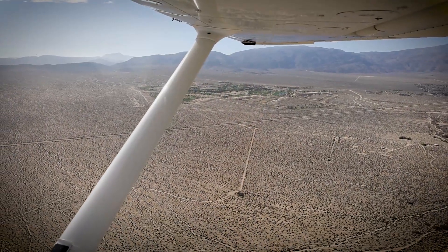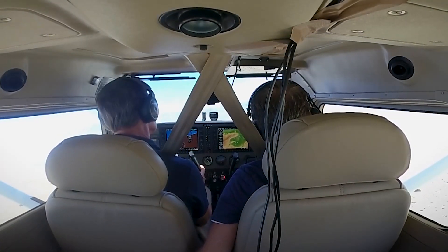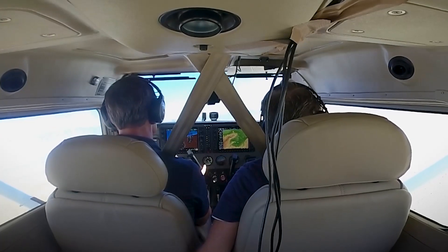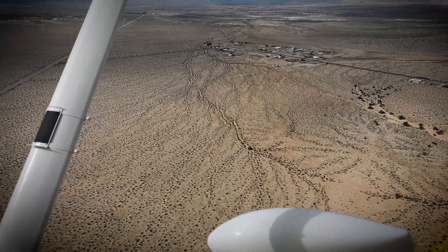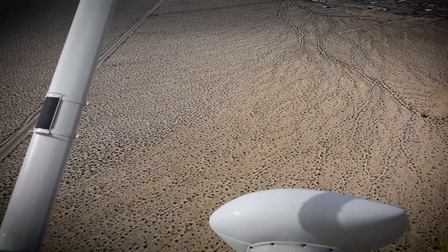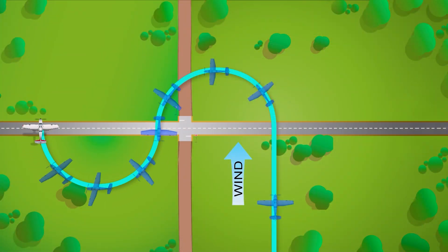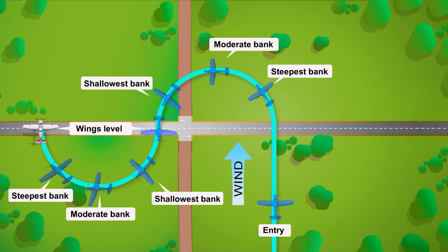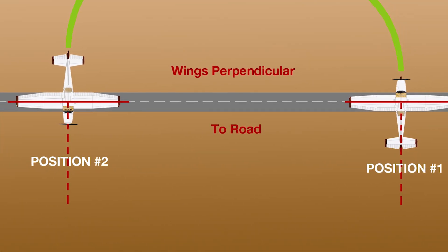We'll set up the maneuver just like the other ground reference maneuvers we've done. We've picked our road, cleared the area, and we'll start at 1,000 feet above the ground at 2,200 RPM, giving us a speed of about 100 knots in the Skyhawk. You'll need to pick a road that's perpendicular to the wind — as close to 90 degrees as you can find. We'll fly at 1,000 feet AGL and have an emergency landing site picked out. Like the other ground reference maneuvers, our banks will be based on ground speed: steeper banks downwind and shallower banks upwind. The critical part is that each time we cross over the road, our wings need to come level and parallel to the road the moment we cross it — and that will be the only time our wings are level.